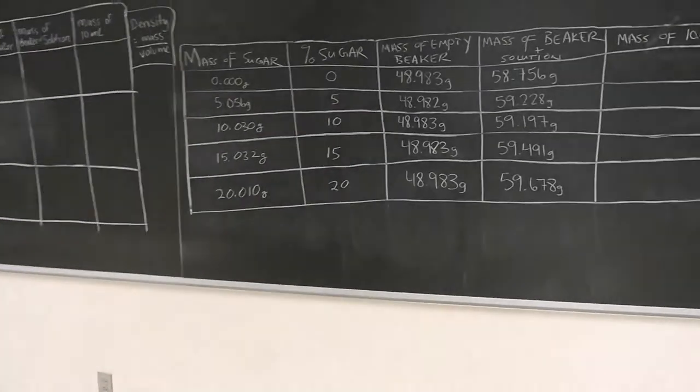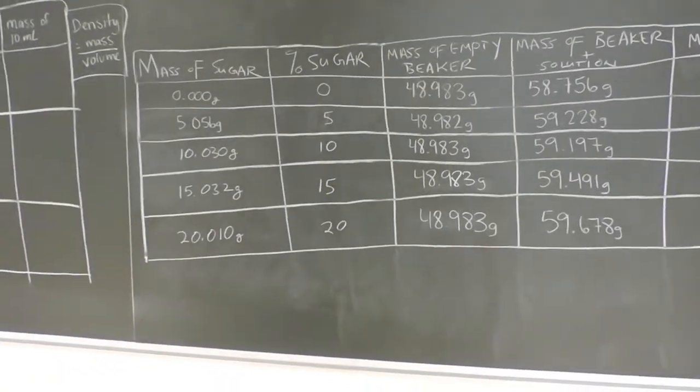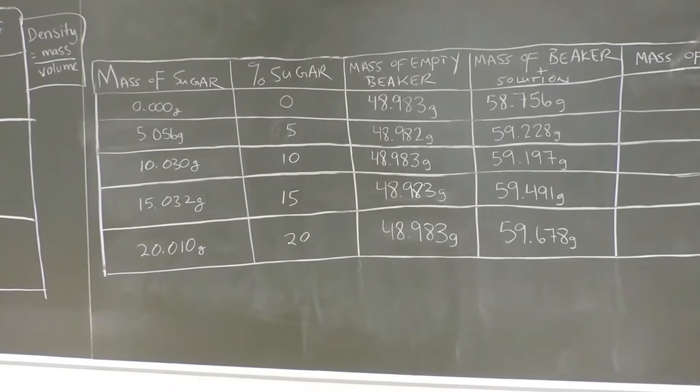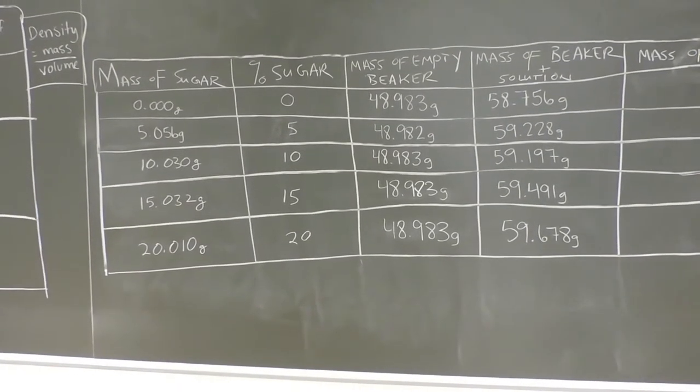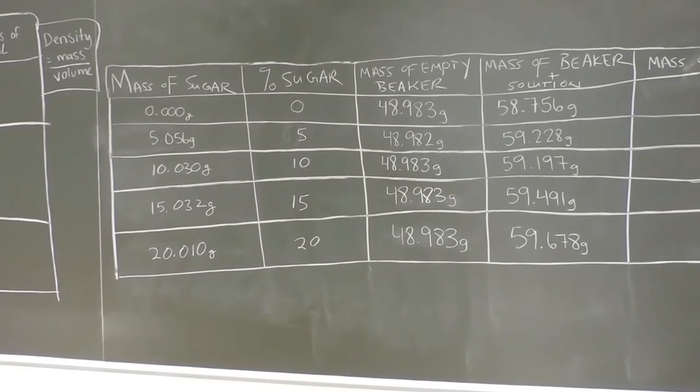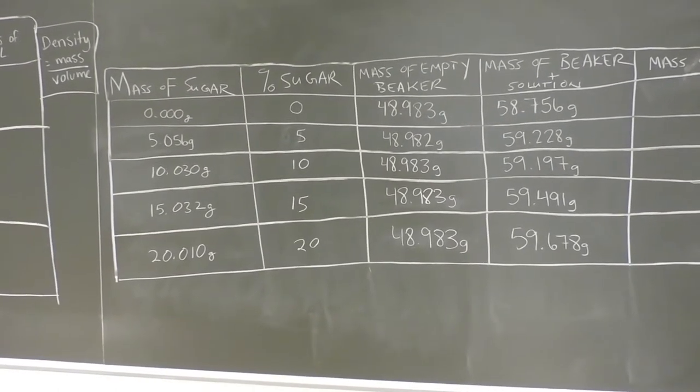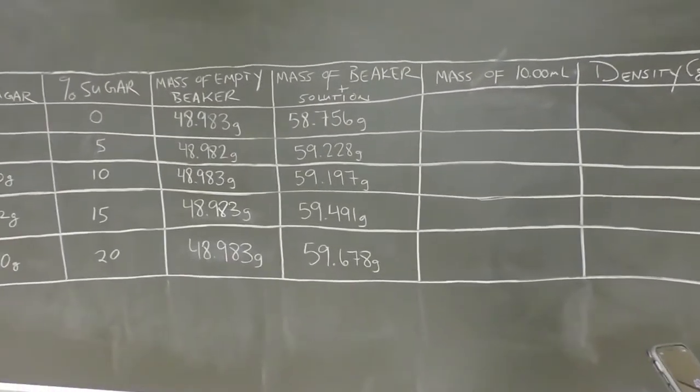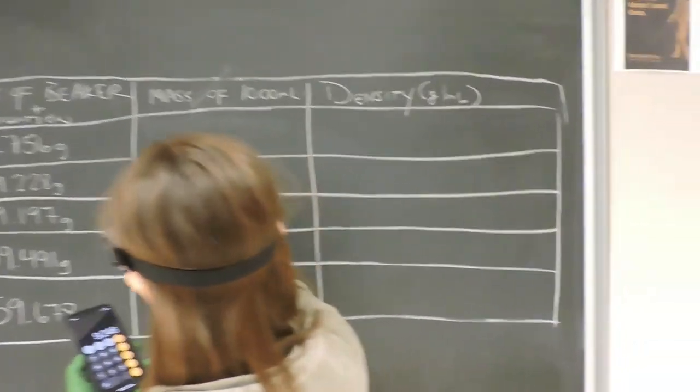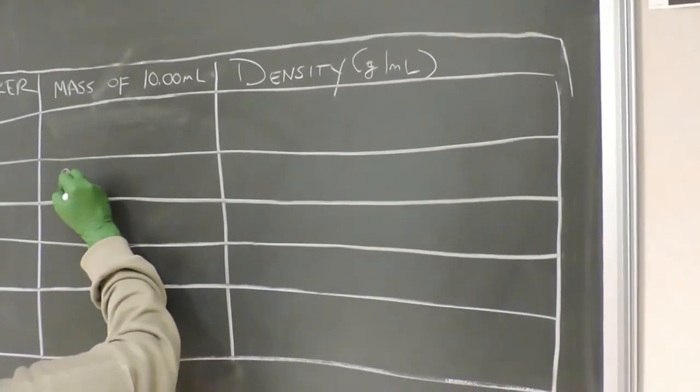And here we have documented the mass of the beaker and solution for all the percentages of sugar, as well as the mass of the empty beaker that we weighed the 10 milliliters of solution in. Using this data here, you should be able to find the mass of 10 milliliters of the sugar solution, as well as the density of the sugar solution.